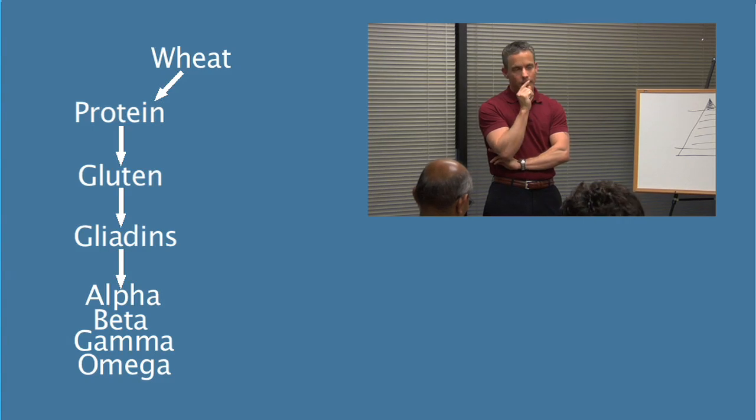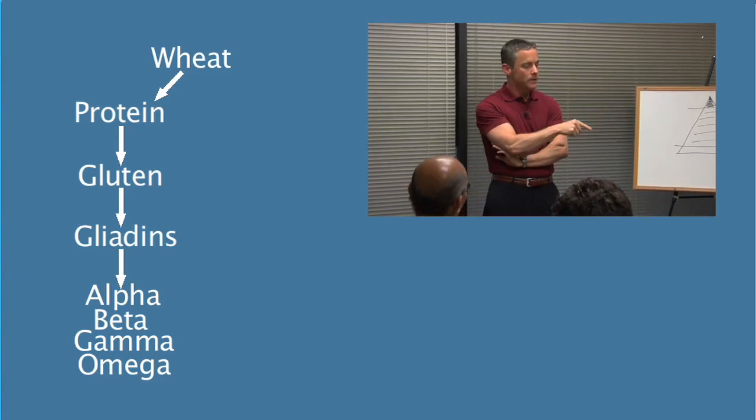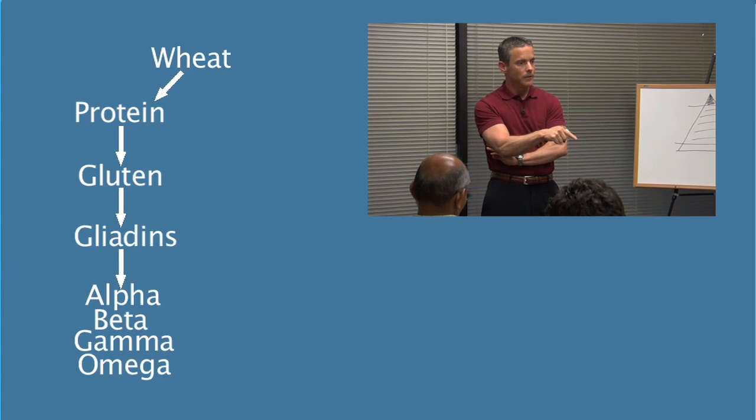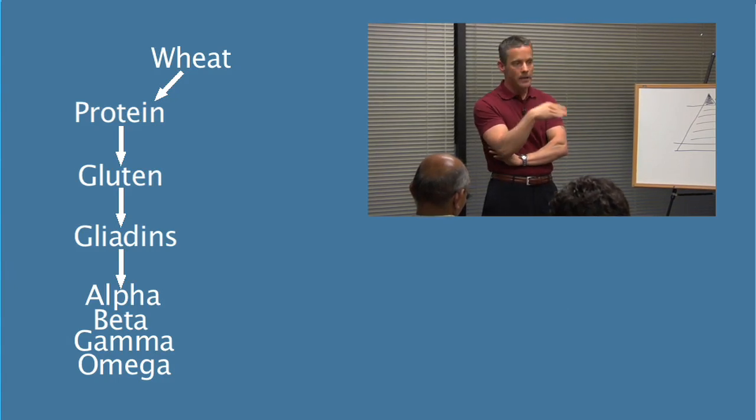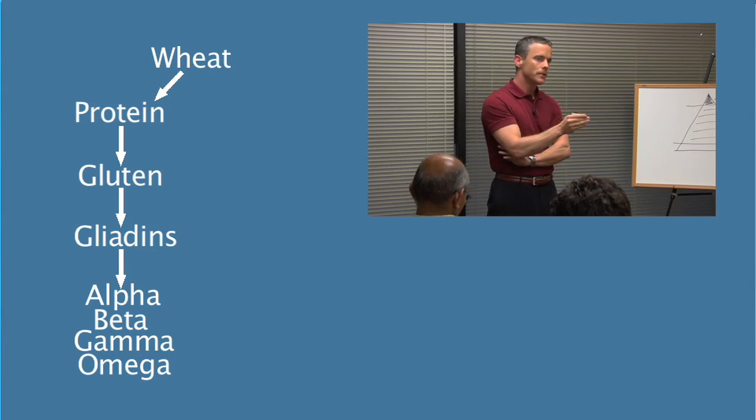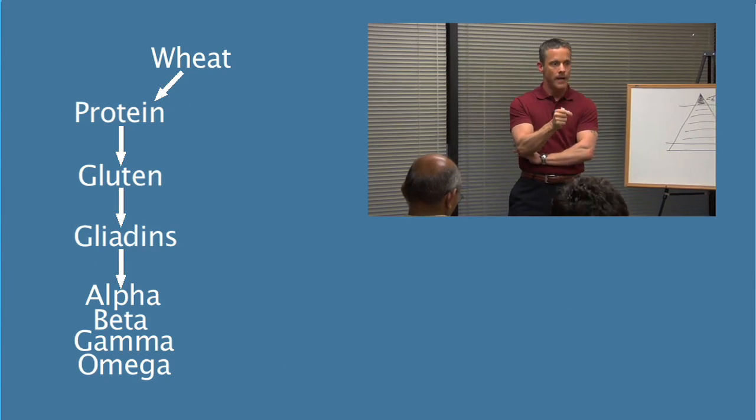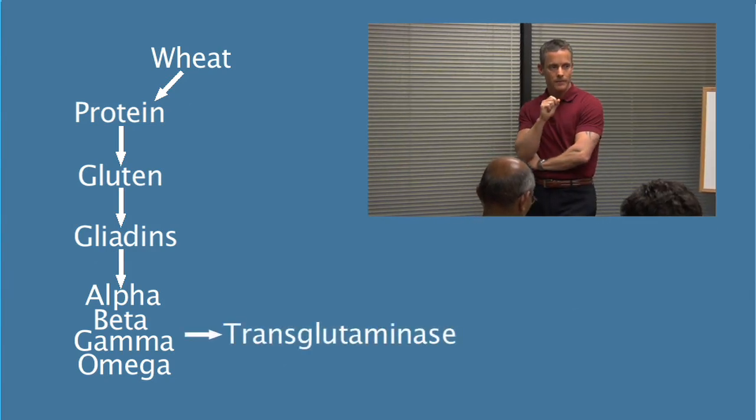Here's the thing. You could be reacting to any one of these components on this sheet, you could have a gluten sensitivity to any one of those. But traditional testing only looks at alpha gliadin and transglutaminase. That's it.